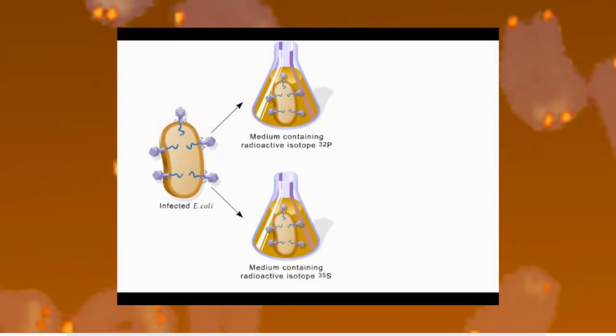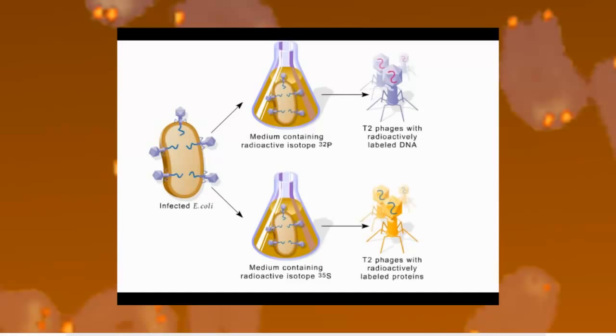All the phages released from the bacteria grown in the phosphorus-32 medium had radioactively labeled DNA, while all the phages released from the bacteria grown in the sulfur-35 medium had radioactively labeled proteins.